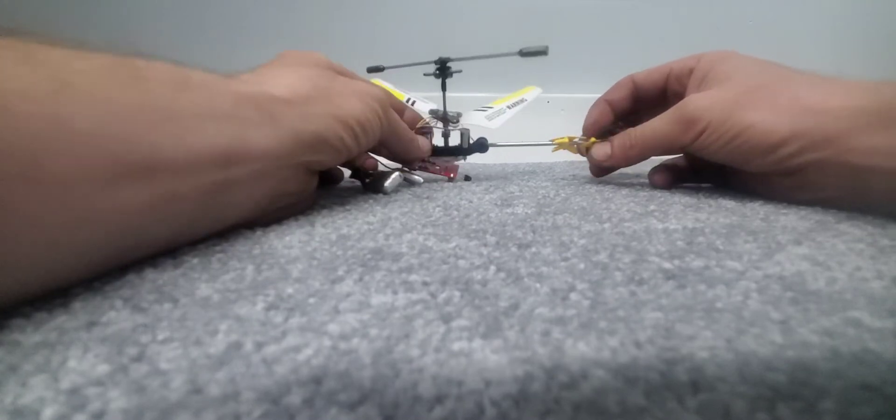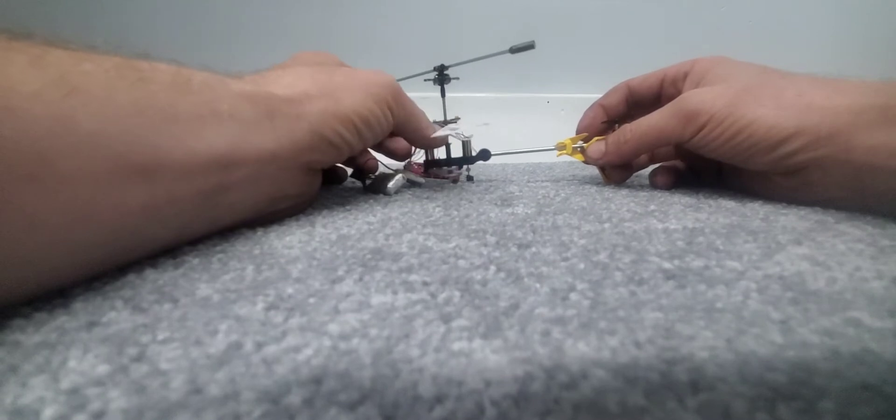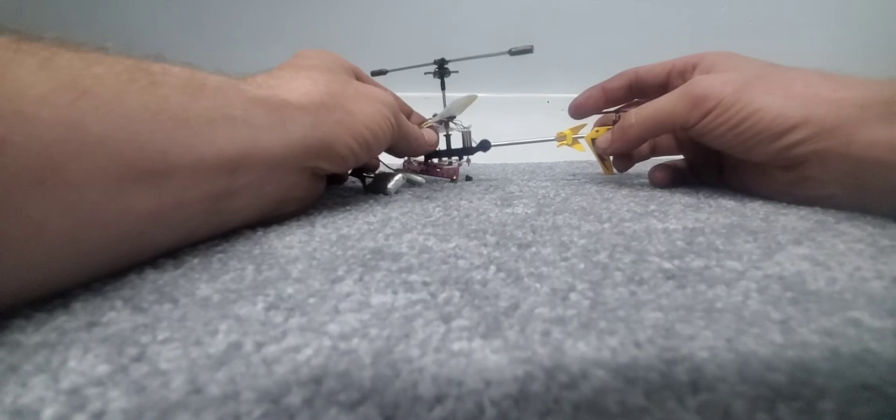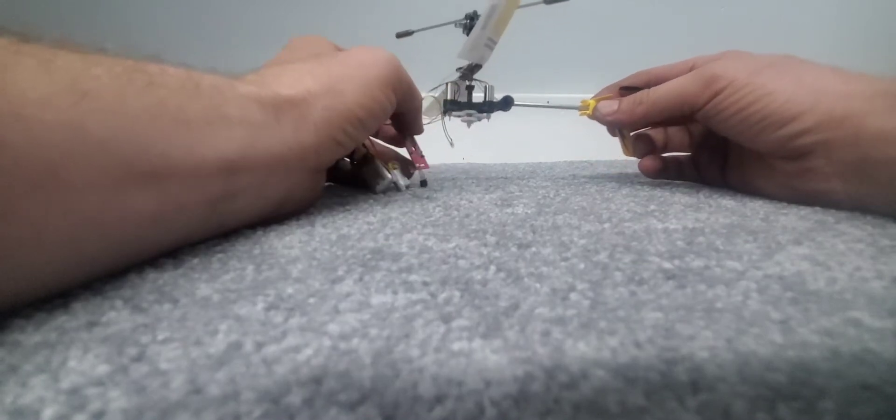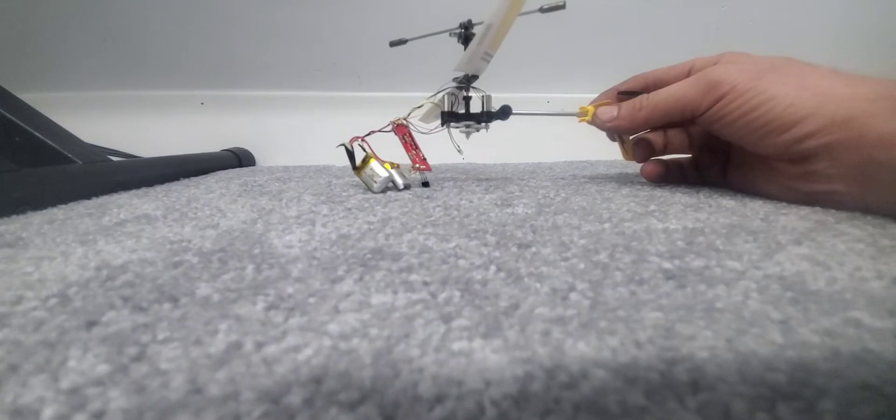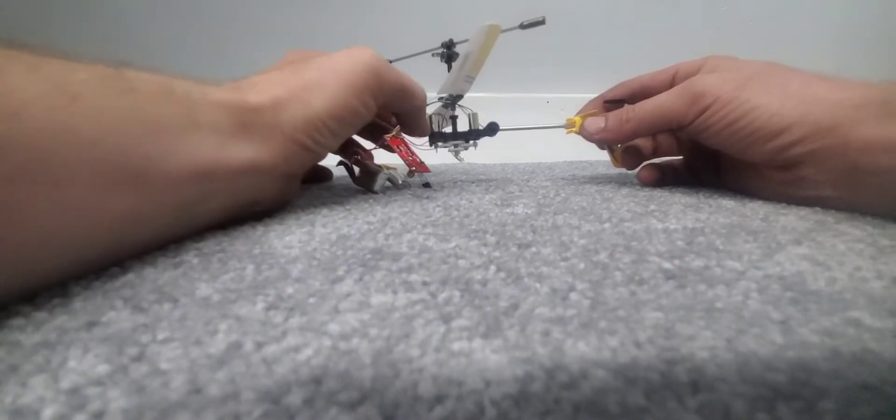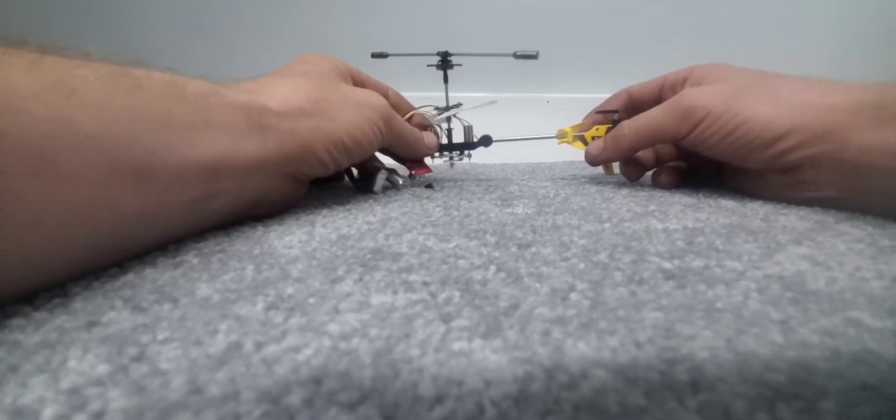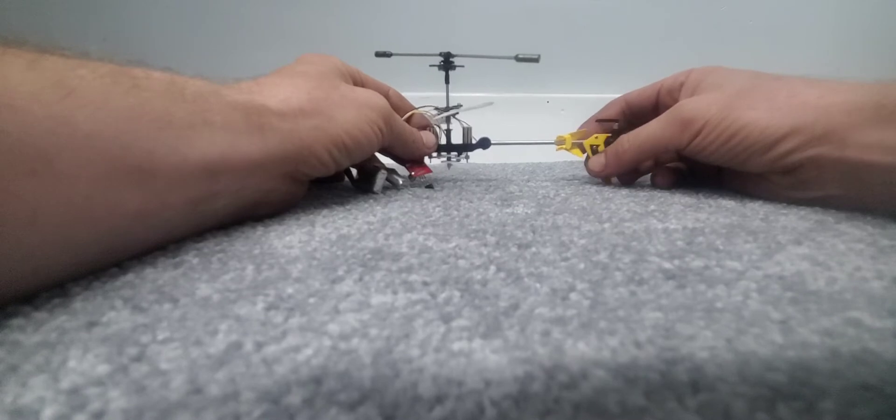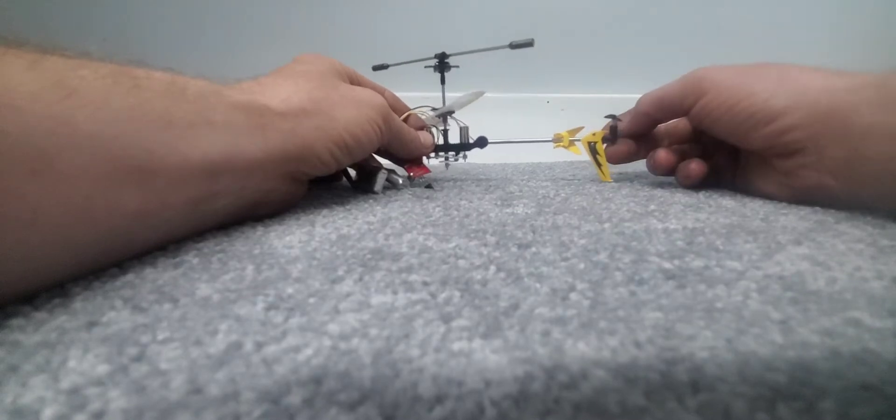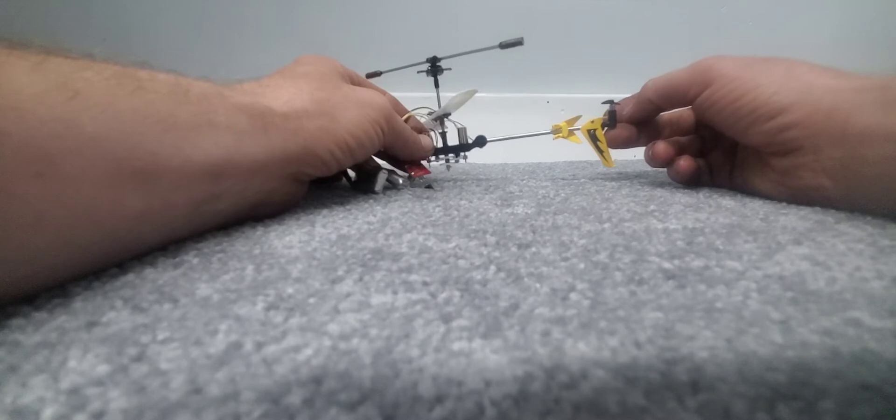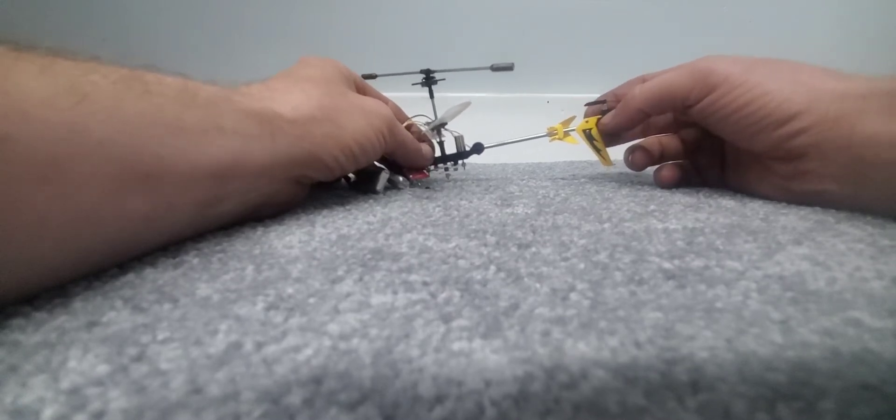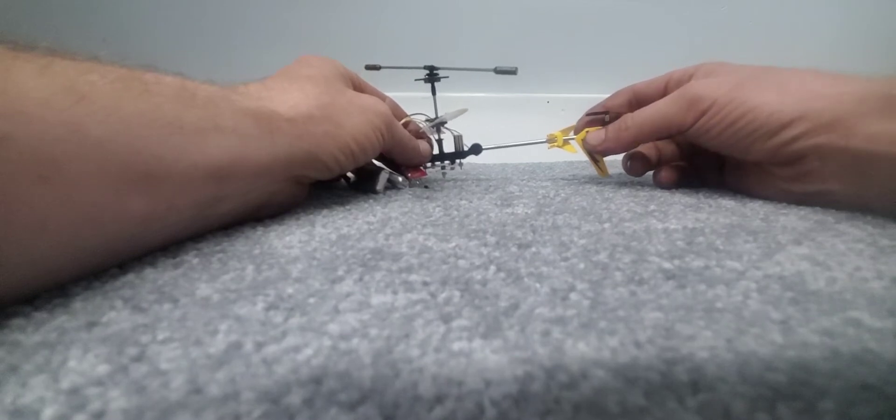The problem is twofold. First of all, how do we get left and right? And second of all, there is a concept called gyroscopic precession which anybody who flies a helicopter knows. When you have a gyroscope and you put a force on it, where the force is felt is going to be 90 degrees in the direction of rotation.